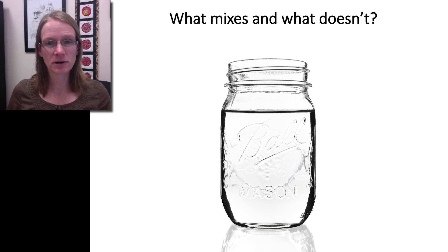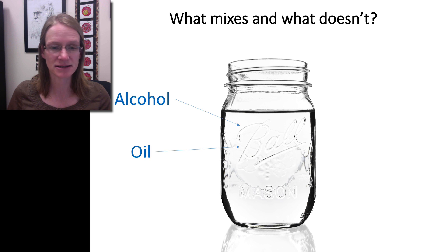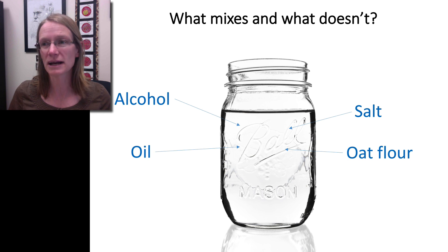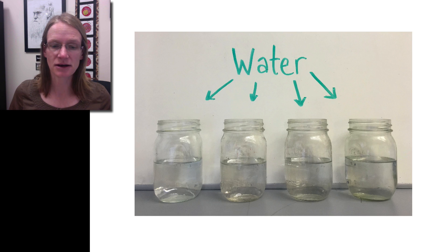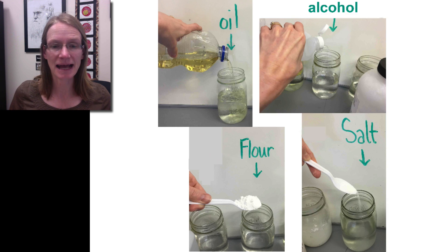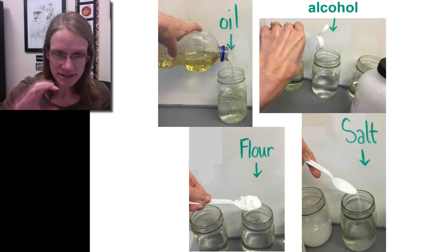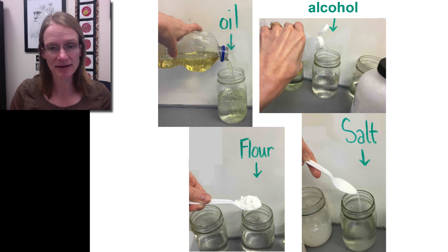We have this glass of water and we can ask: if we put things in the water, what things mix and what things don't mix? We could take alcohol, oil, salt, or flour and see if any of these individual things mix, to understand what happens at the atomic level. We start with four different jars containing only water, and add each of these four different substances into each jar. We then mix them around thoroughly, set them back on the table, and let them sit for about a minute to see what happens.